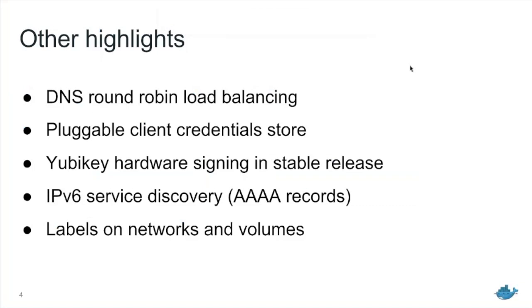We've also got in this release the YubiKey hardware signing, which we added a couple of releases ago in the experimental version, but this is now in the stable mainstream release. What this lets you do — if you've got a YubiKey and you want to sign images with Docker content trust — you can now use a private key that is stored on your hardware USB YubiKey. The idea is that you can build images and sign them with this hardware key, and you can configure engines that run those images so that they will only be allowed to run if they've been signed with this YubiKey hardware key. In production, you can ensure that the only stuff that runs is stuff that has been signed by people in possession of this actual piece of hardware.